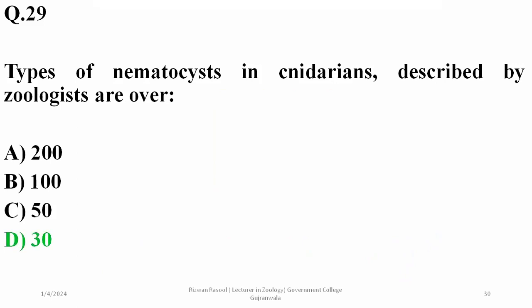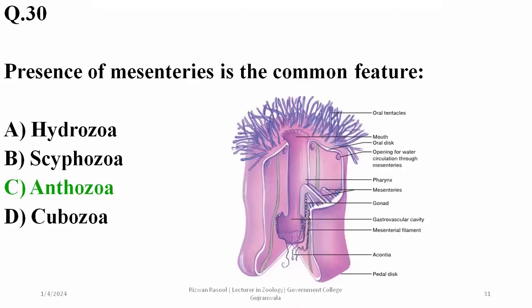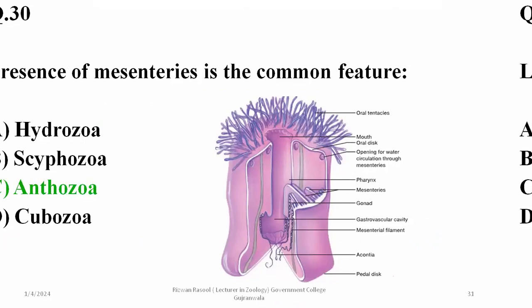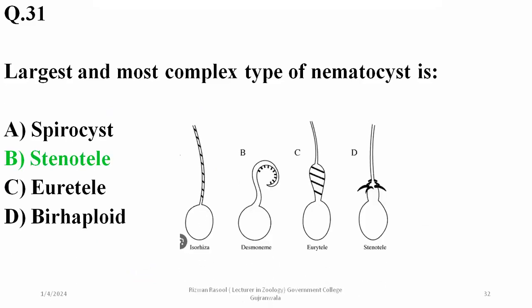Question 30: presence of mesenteries is a common feature of class Anthozoa such as sea anemones. The largest and most complex type of nematocyst out of the approximately 30 types is stenotele, which is relatively larger and more complex compared to other types. Eurytele, desmoneme, and isorhiza are some of the other types shown in the diagram.